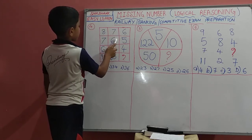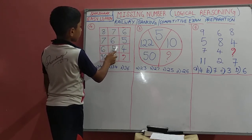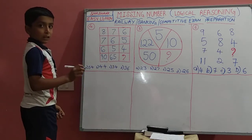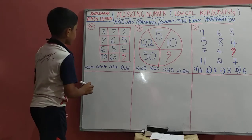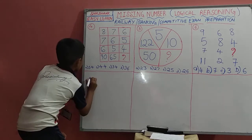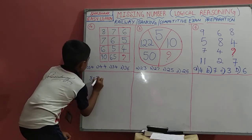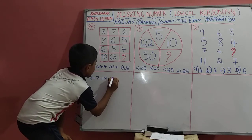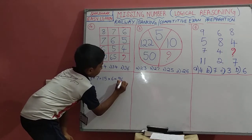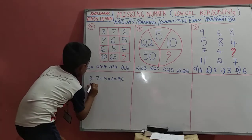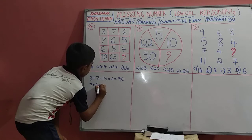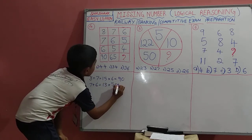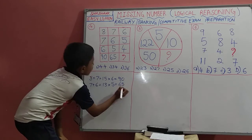7 plus 6 is 13, and 13 into 5 is 65. So the logic is: we have to first add the two numbers and multiply the third number. So 8 plus 7 is 15, and 15 into 6 gives us the result. And 7 plus 6 is 13, and 13 into 5 is 65.